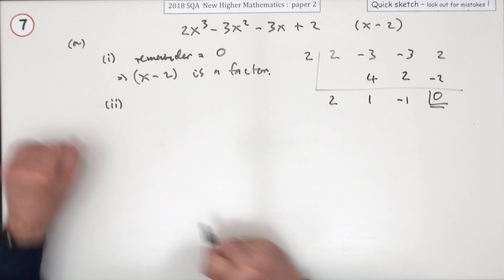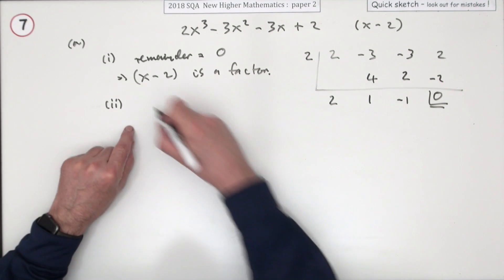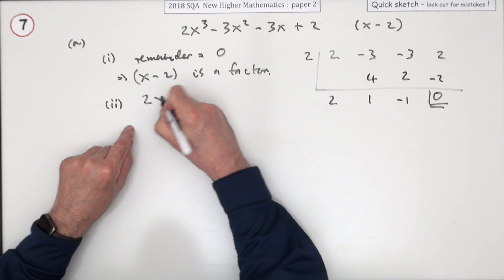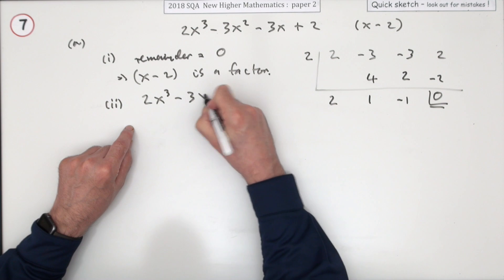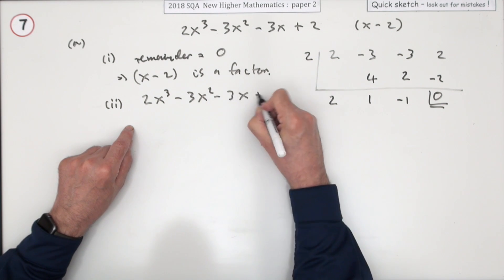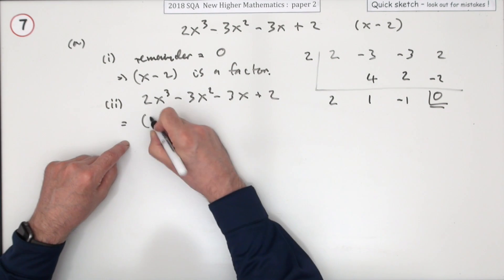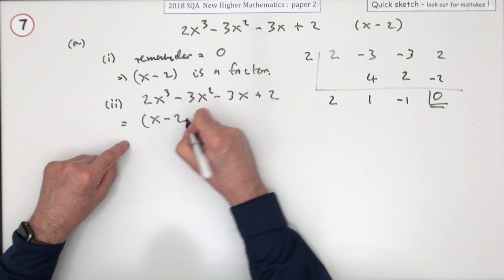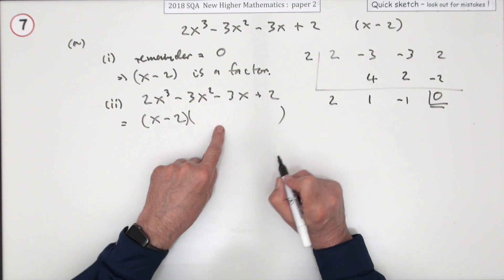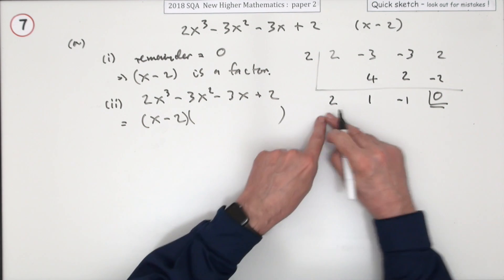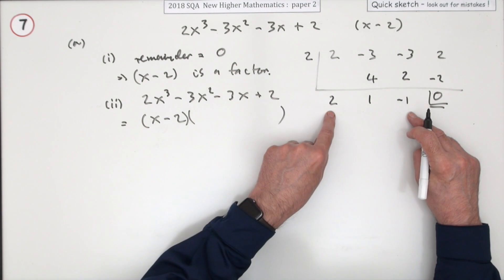Now the second part: hence, factorise it fully. So there's the expression, and that's got x minus 2 as one factor, so there must be a quadratic factor here. It's given by this portion of the synthetic division table.